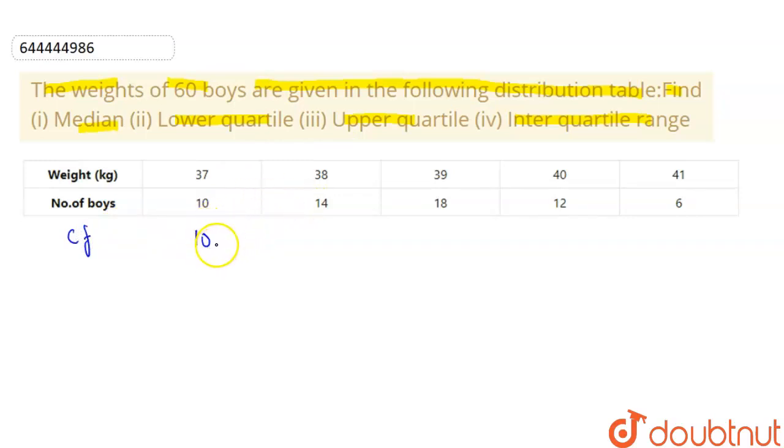So we keep 10 as the same. Now we add 10 plus 14, that will give us 24; 24 plus 18, 42; 42 plus 12, 54; 54 plus 6, that is 60. Right, and the total is also 60 here.